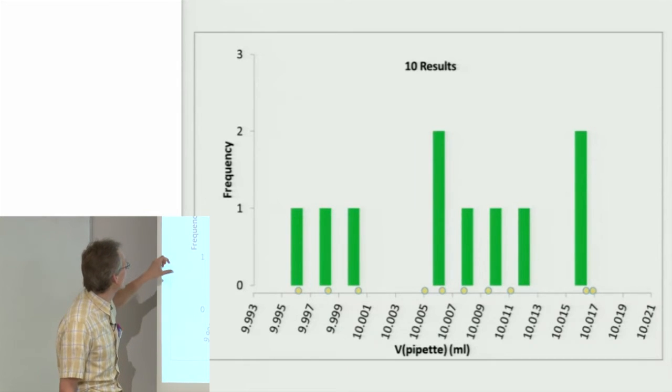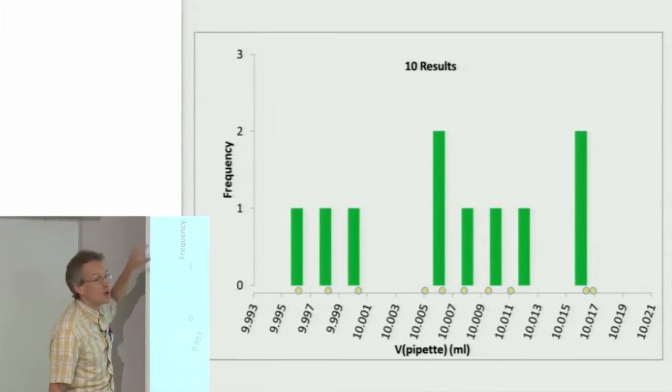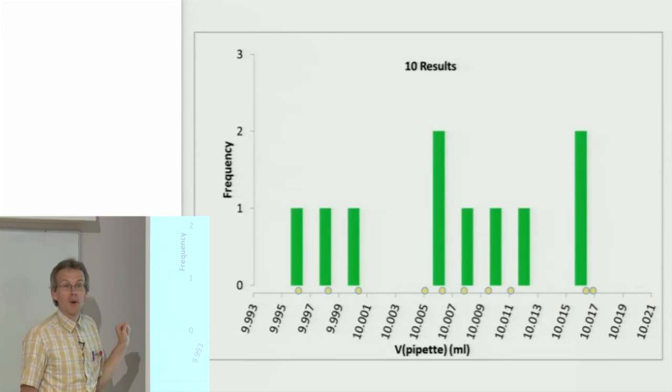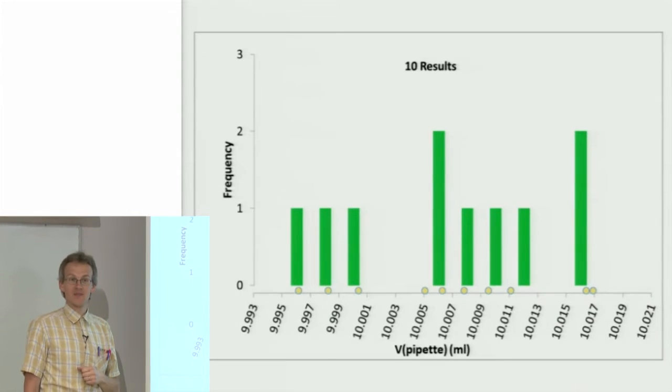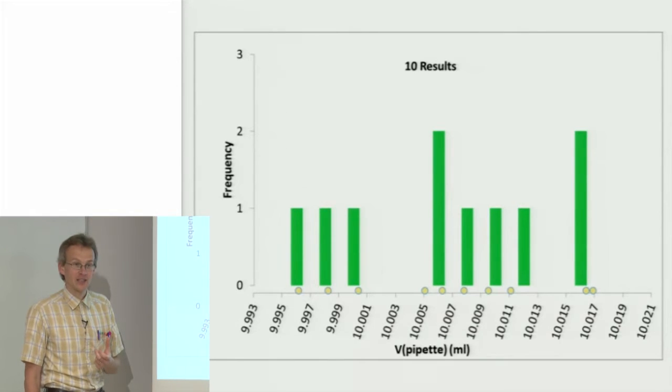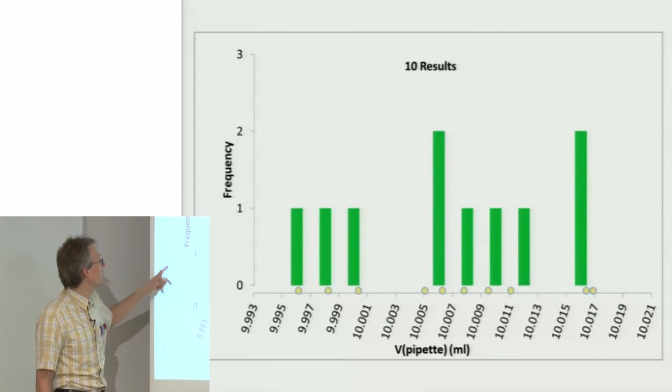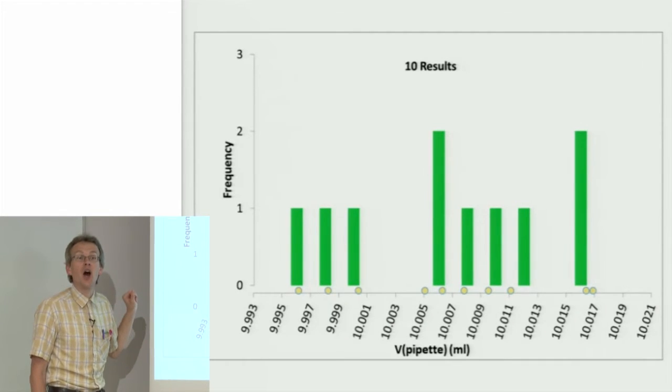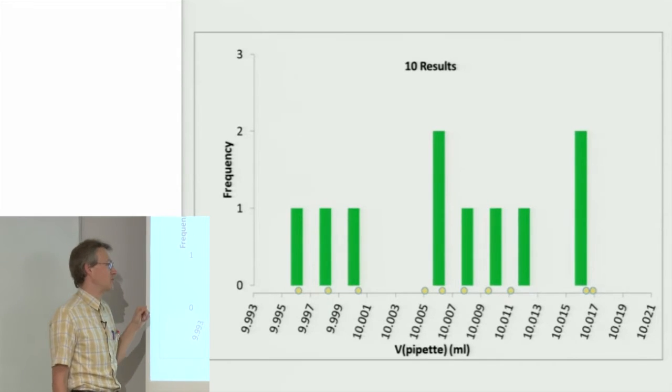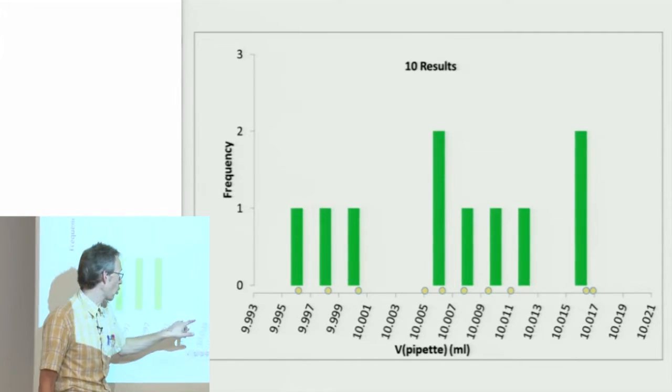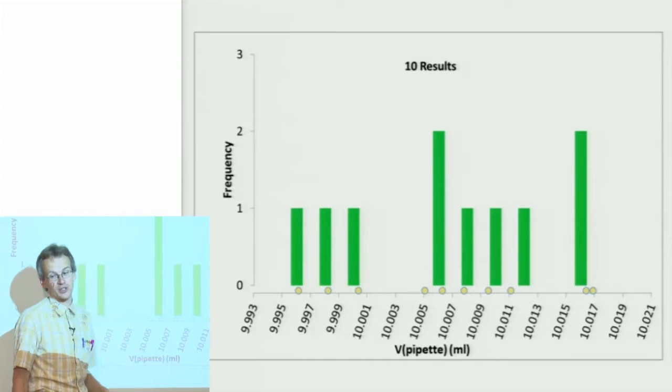Let us also look at this axis here. It's now not probability, but frequency. Probability and frequency are closely connected to each other. Basically, the higher the probability, the higher the frequency of a certain measurement result occurring within a certain limit.